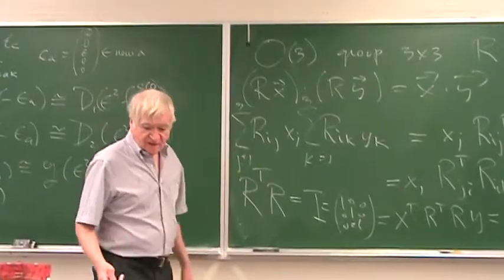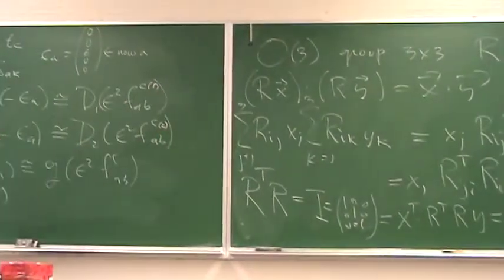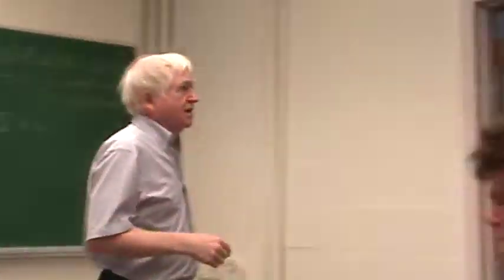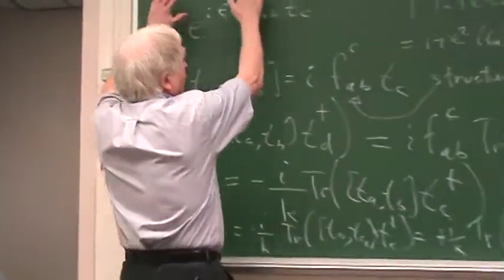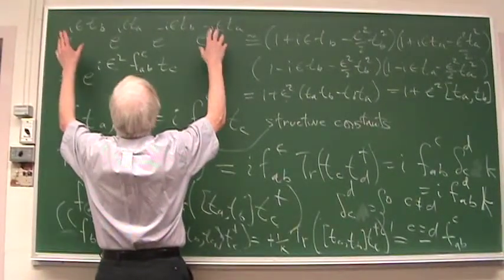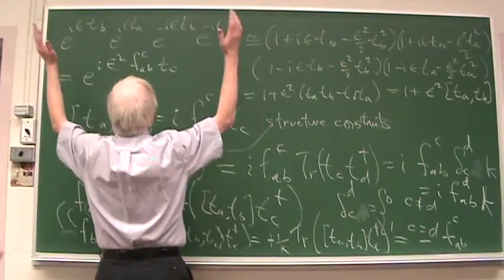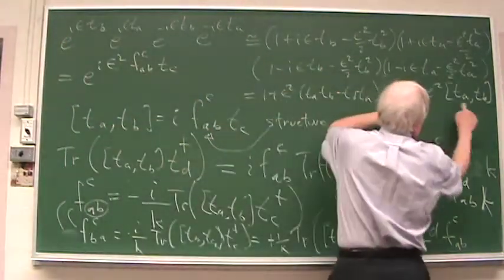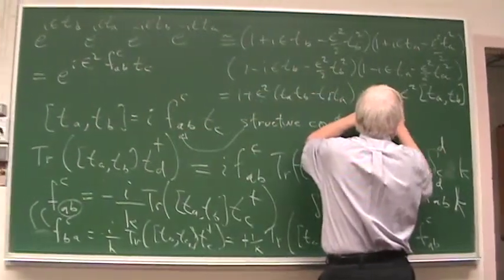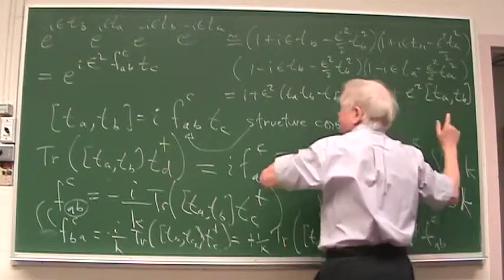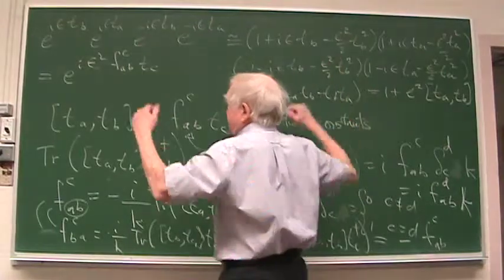So let us just remember what we did. Let me recapitulate. We have the product of four infinitesimal matrices in a particular representation. We know from this explicit computation that it's equal to one plus epsilon squared times the commutator of the generators, which are n-by-n matrices.